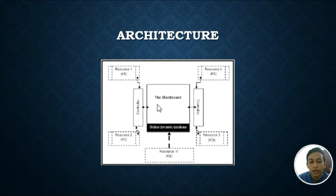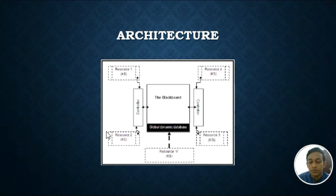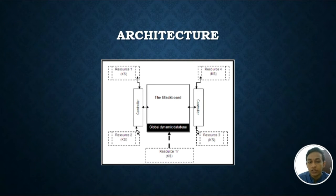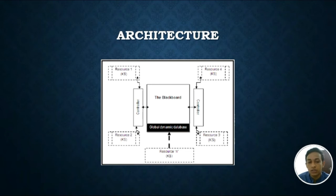In this architecture there are resources, a controller, and the blackboard. The blackboard is the global dynamic database. The resources are like human agents or experts who provide problem-solving techniques and their ideas. The controller manages the connection between the resources and the blackboard. Each resource shares or contributes its ideas or solutions on the blackboard, where all contents are listed, and step by step the problem is solved until the final result appears on the blackboard.